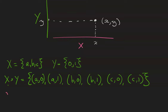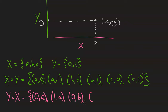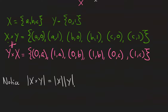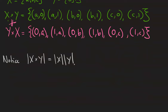However, y cross x is a different set because the order of all the pairs is flipped. That would be: (0,A), (1,A), (0,B), (1,B), (0,C), and (1,C) — and these are not the same set. Finally, the cardinality of x cross y is equal to the cardinality of x times the cardinality of y.